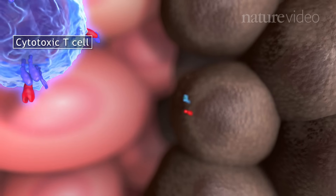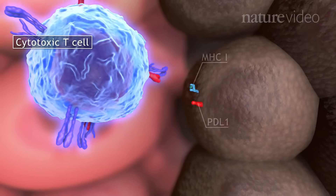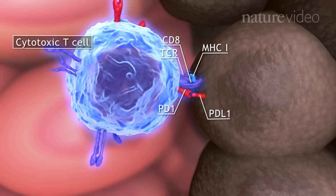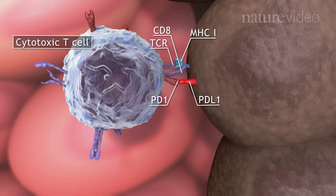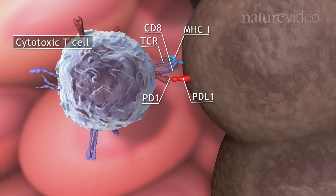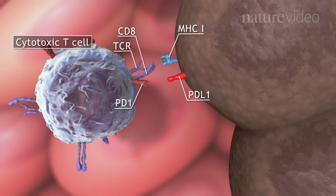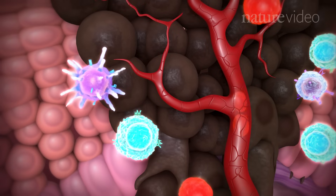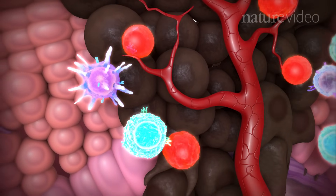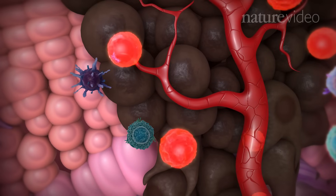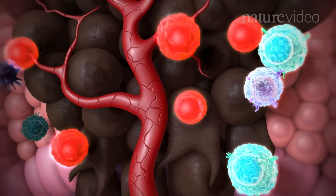Some tumour cells actively suppress T cells by expressing inhibitory molecules, such as PDL1. PDL1 binds to the PD1 receptor on T cells and deactivates them. This is an immune checkpoint. In addition, tumour cells can attract immune cells that suppress the activity of other immune cells, thereby supporting tumour growth.